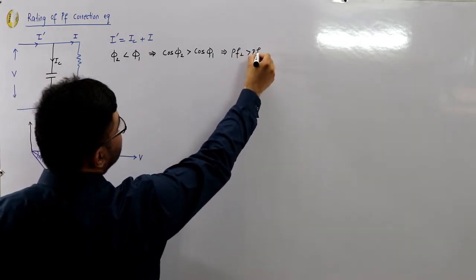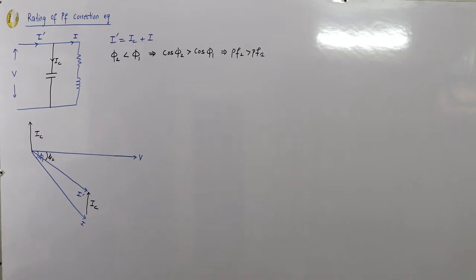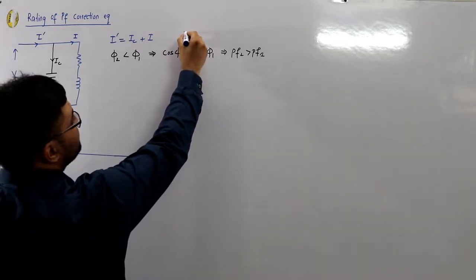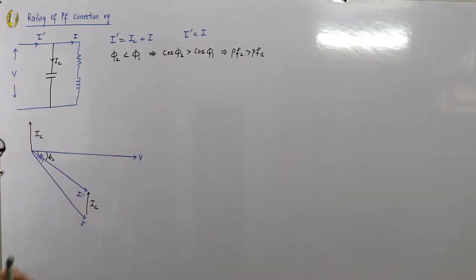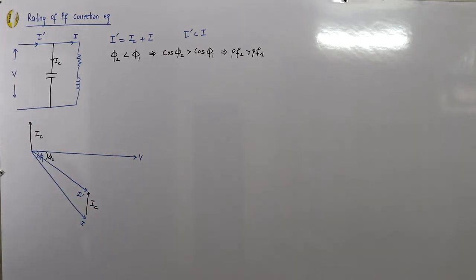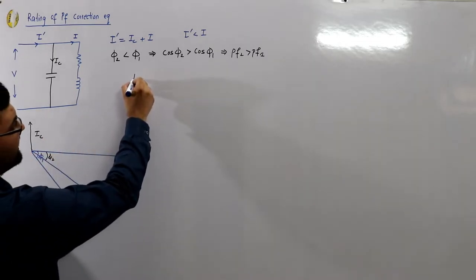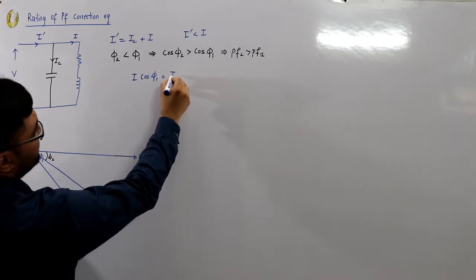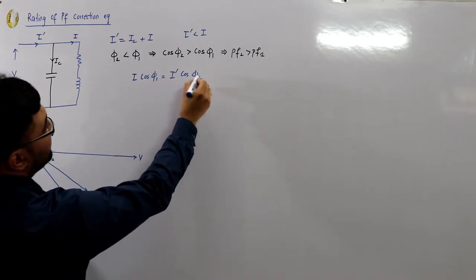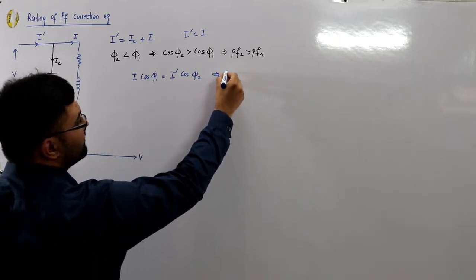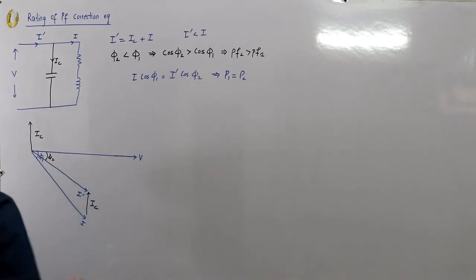I' is also less than I. The active component remains the same while the reactive component has reduced. Looking at the phasor diagram, I cosφ1 equals I' cosφ2 — the same projection. This implies P1 equals P2, as we saw in the previous video.